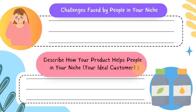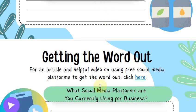Last but not least, describe how your product helps people in your niche. Look at your product's labeling, pamphlets, and website. If your supplier provides a website where customers can place orders, review that information and look at the benefits. Think about the benefits people will get when they start losing weight, and map out how your product helps people in your niche.